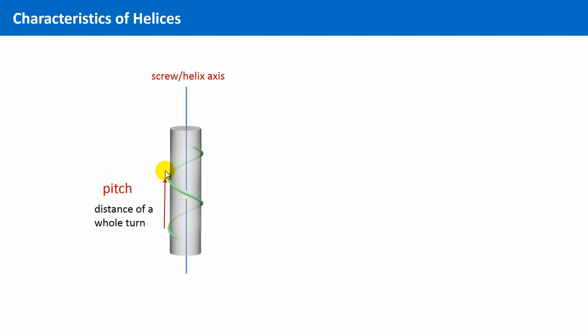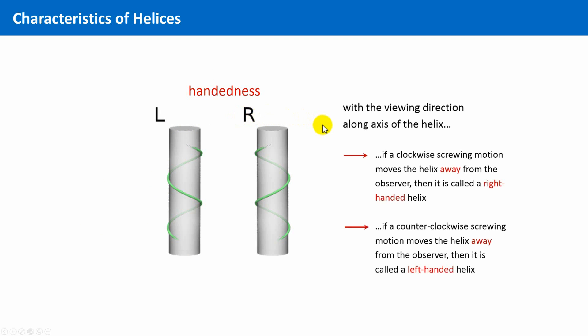And a helix has a so-called handedness. It can be either left- or right-handed. With a viewing direction along the axis of the helix, if a clockwise screwing motion moves the helix away from the observer, then it is called a right-handed helix, and inversely.